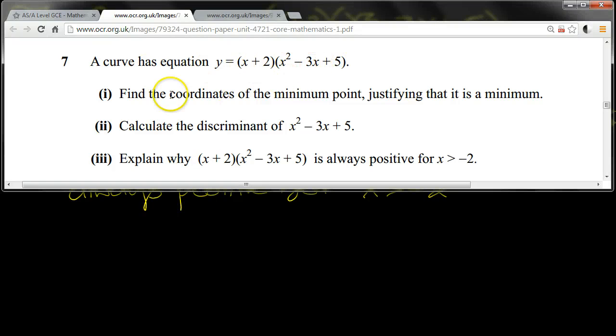A curve has this equation. Find the coordinates of the minimum point, justifying that it is a minimum. Calculate the discriminant of this. Explain why this function is always positive for x bigger than minus 2.